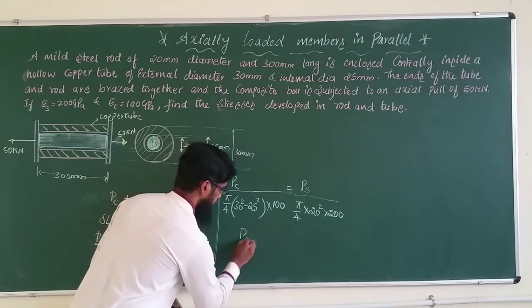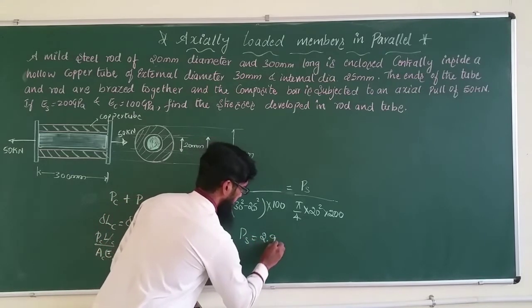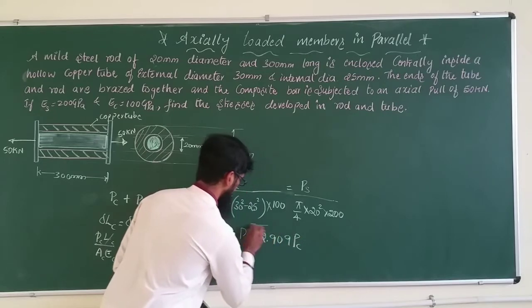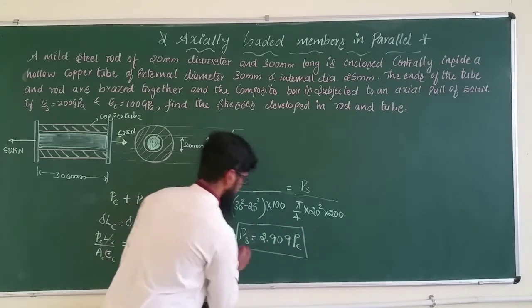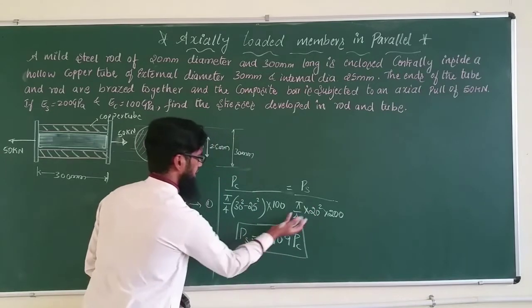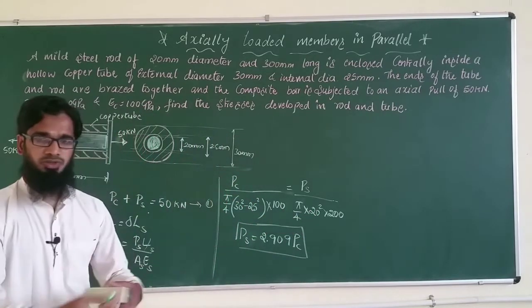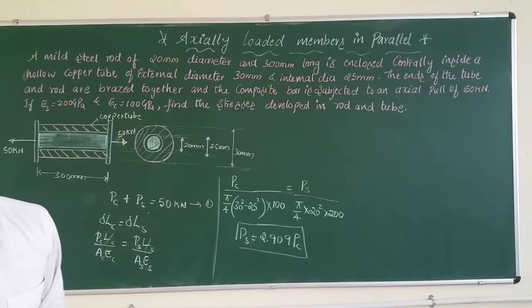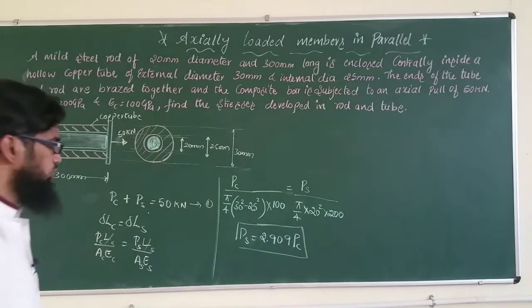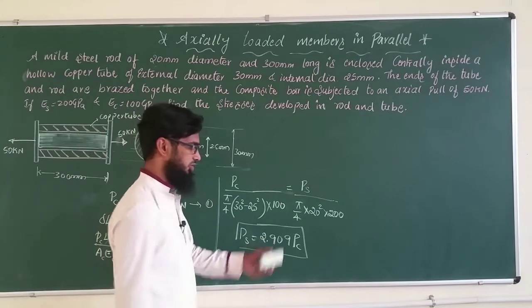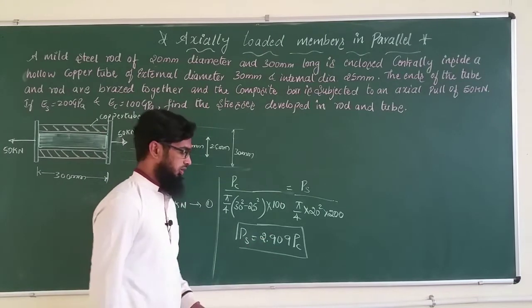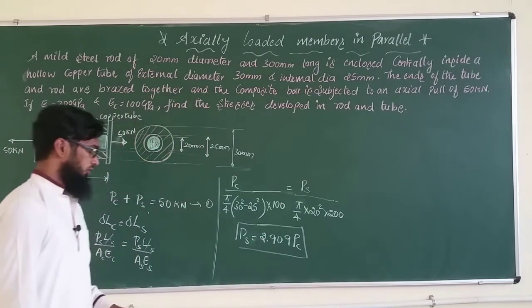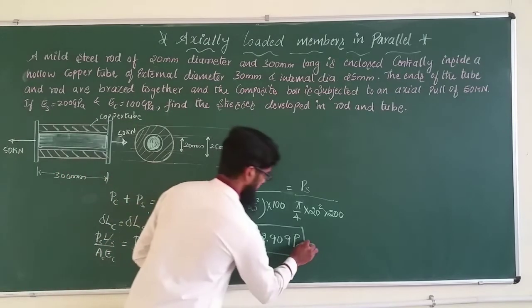Simplifying and rearranging, we get P_s = 2.909 · P_c. This is our Equation 2.